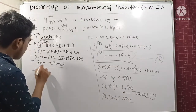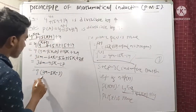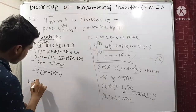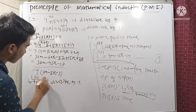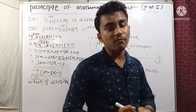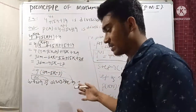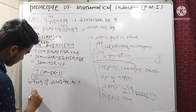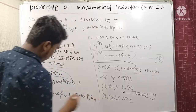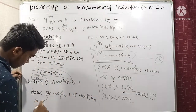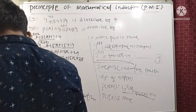This equals 9(4m − 5k − 3), which is divisible by 9. So P(k+1) is divisible by 9. Hence, by the method of mathematical induction, P(n) is true for all n.